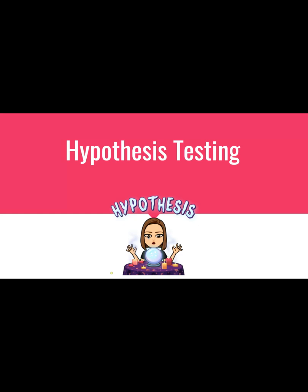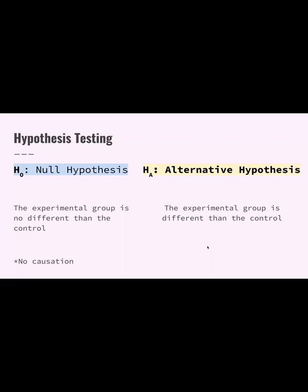Here is a review of hypothesis testing, which is something that we use in AP Bio. There are two different types of hypotheses in a hypothesis test: the null, or H-sub-0, and the alternative, H-sub-A. The null hypothesis states that the experimental group is no different than the control — in other words, there's no cause and effect, no difference between the two groups or multiple groups. Whereas with the alternative hypothesis, we say that the experimental group is different than the control, or there is some type of cause and effect happening.